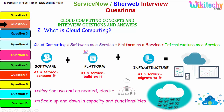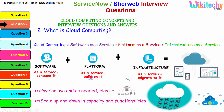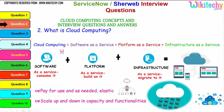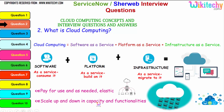Cloud computing is composed of Software as a Service, Platform as a Service, and Infrastructure as a Service. The collaboration of software, platform, and infrastructure is referred to as cloud computing. A major advantage is the pay-for-use model — if you need minimal storage, pay for that; if you need bigger storage, pay for that. It is elastic, meaning you can scale up and down in capacity and functionality.